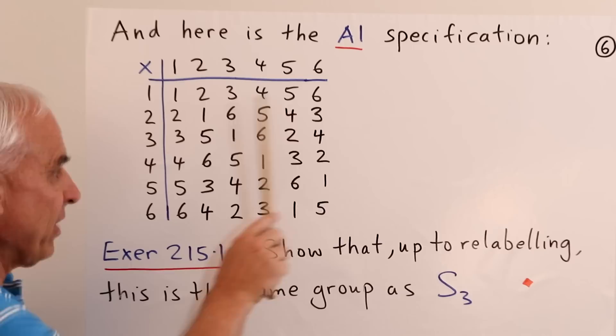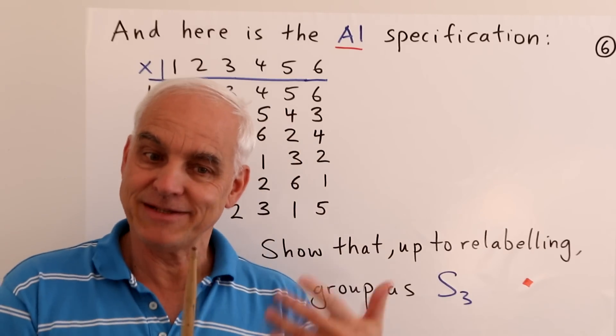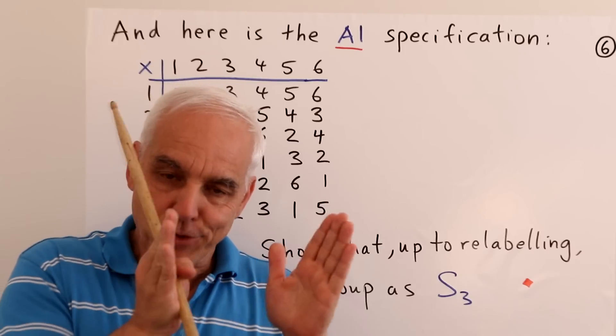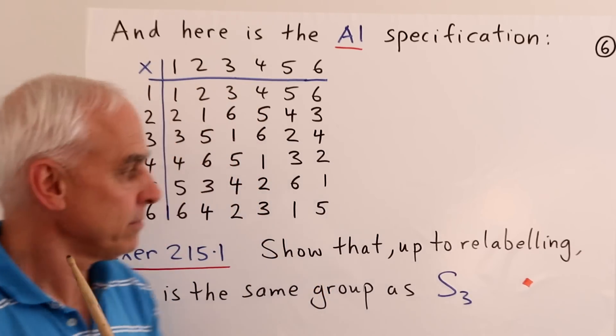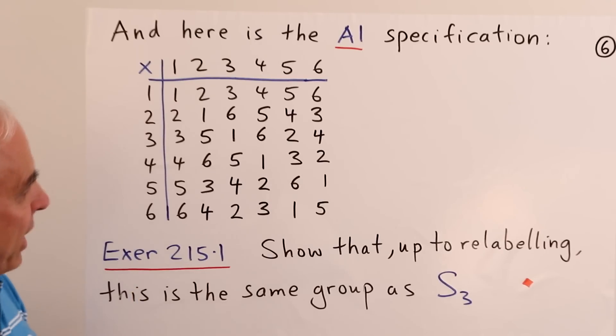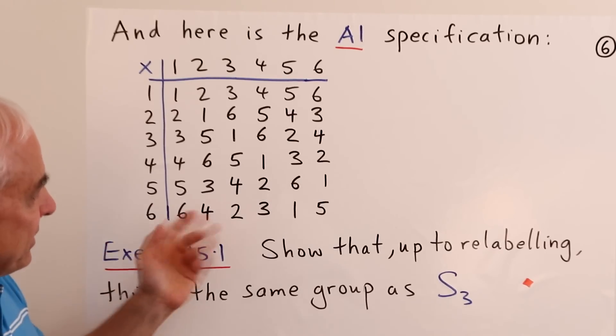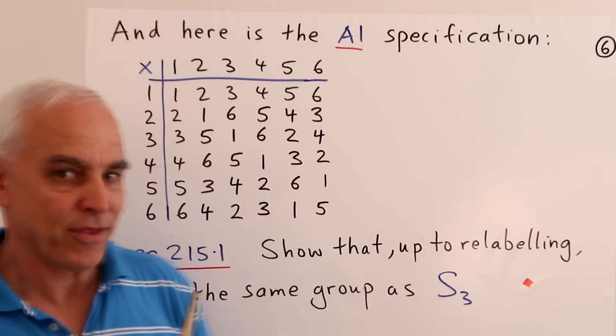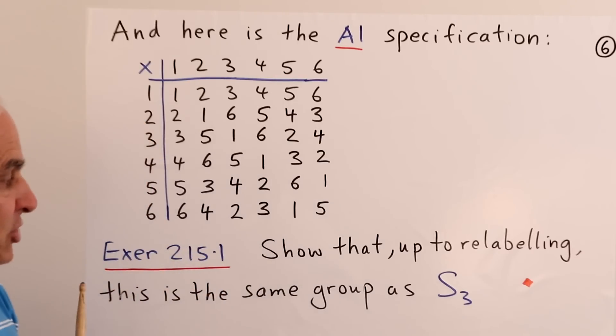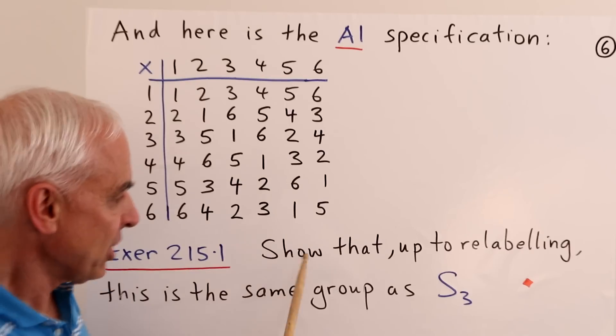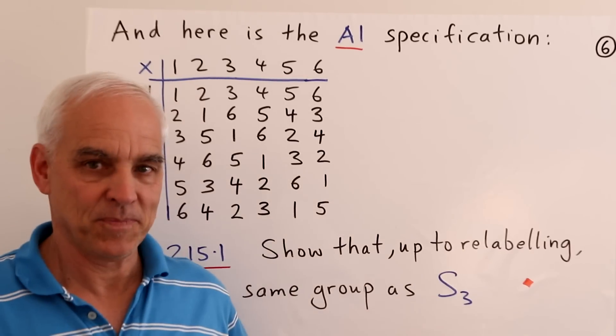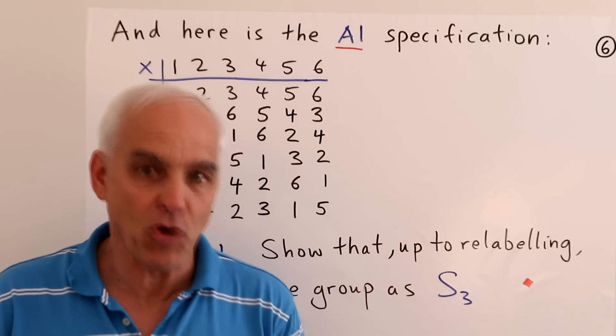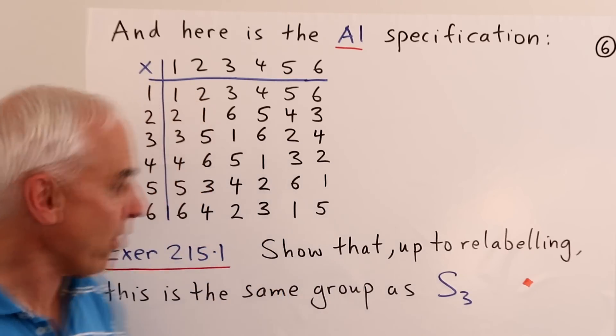So this is a very efficient way of thinking. But it does really look at things from just a pure algebraic point of view. Okay, but this is a pleasant group with six elements. It's one that we should be familiar with. So as an exercise, show that up to relabeling, this is the same group as S3. It's the same as the symmetric group on three things, which we've seen before.